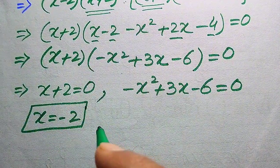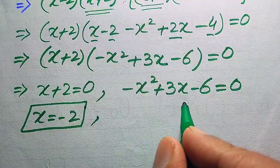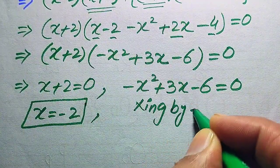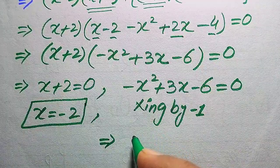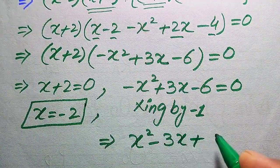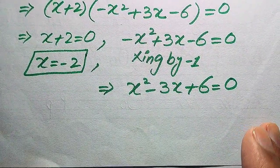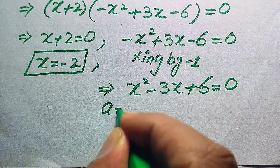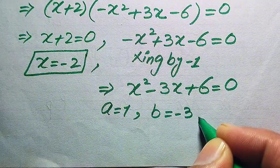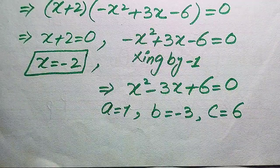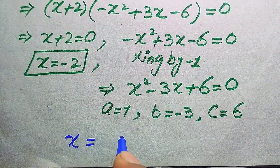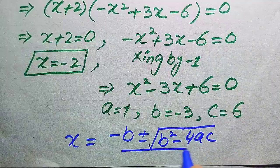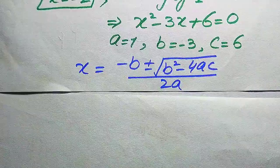For Case 2, we solve the quadratic minus X squared plus 3X minus 6 equals 0. We multiply both sides by minus 1 to get the standard form: X squared minus 3X plus 6 equals 0. Now we apply the quadratic formula. The coefficients are a equals 1, b equals minus 3, and c equals 6. The quadratic formula is x equals negative b plus or minus square root of (b squared minus 4ac) all divided by 2a.